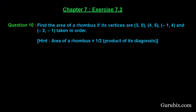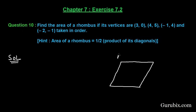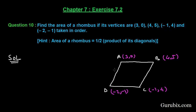Welcome friends. Let us solve question number 10 of Exercise 7.2 of Chapter 7. The question says: find the area of a rhombus if its vertices are (3, 0), (4, 5), (−1, 4), and (−2, −1) taken in order. Let us draw a rough sketch of the rhombus. Let A, B, C, and D be the vertices, where A is (3, 0), B is (4, 5), C is (−1, 4), and D is (−2, −1).